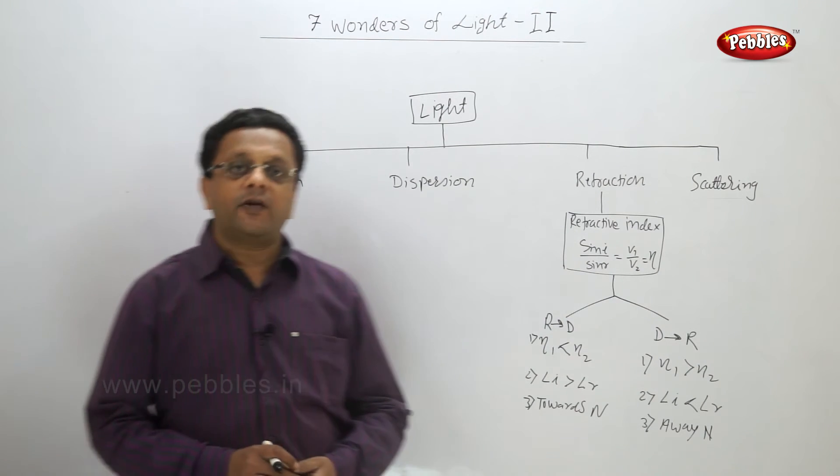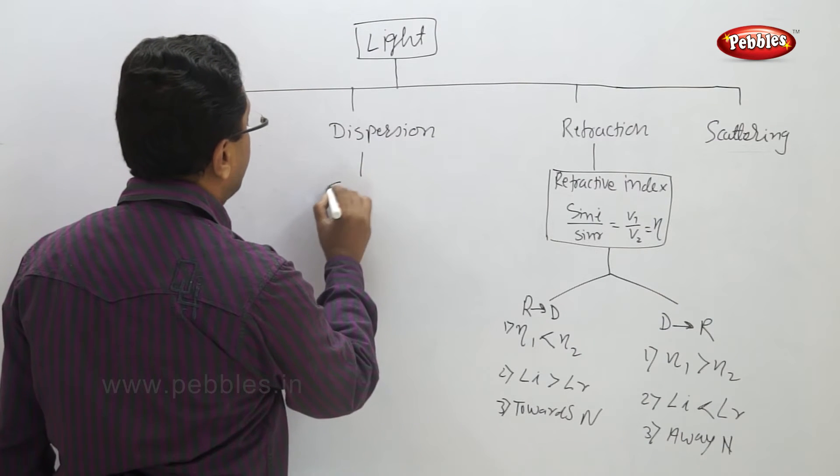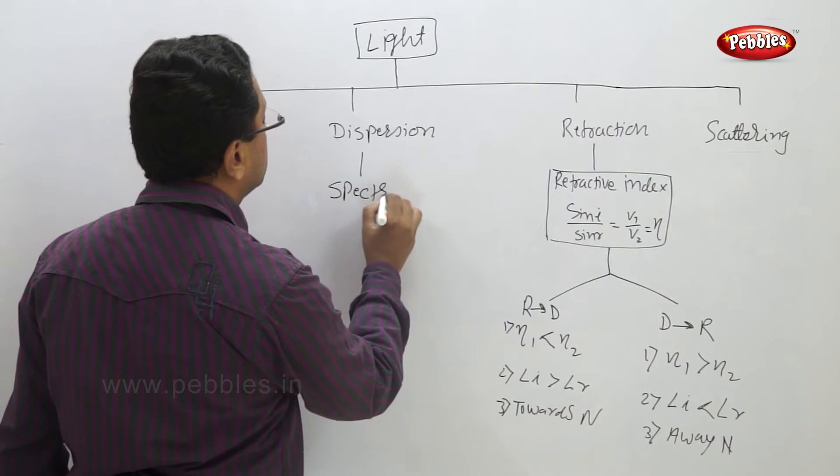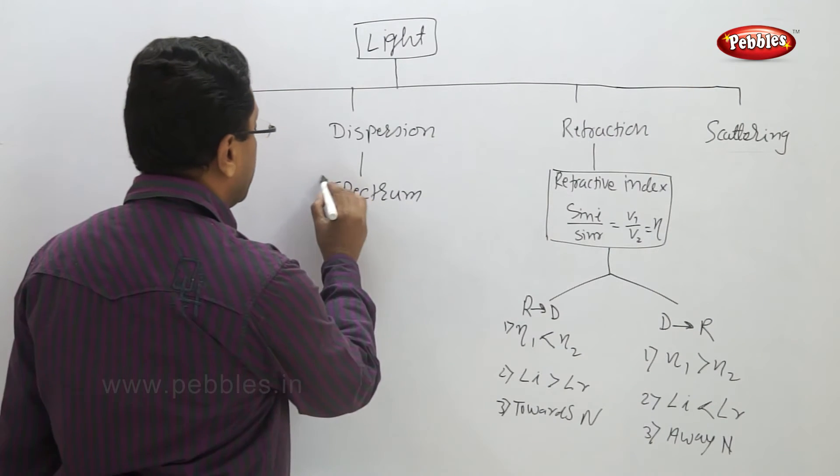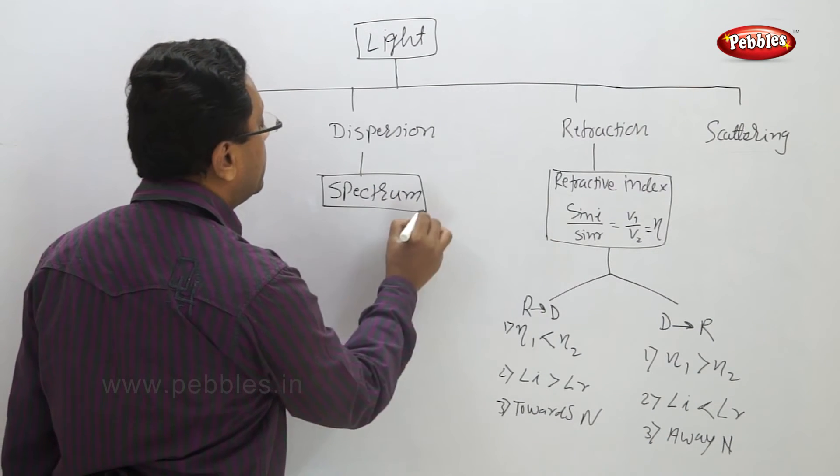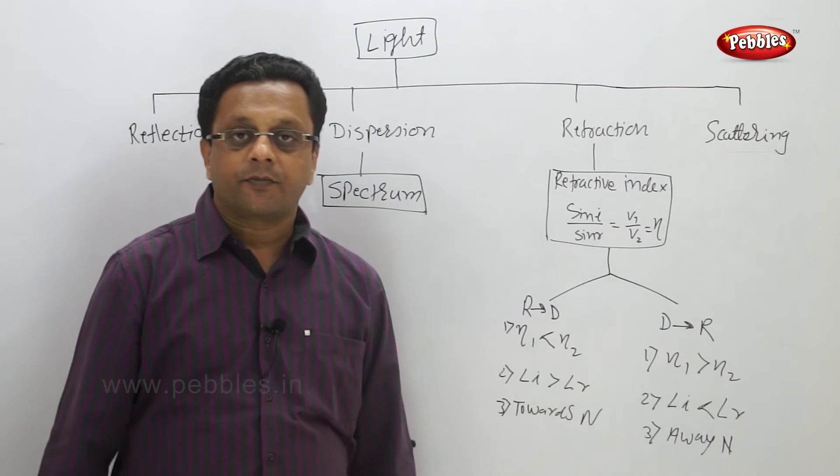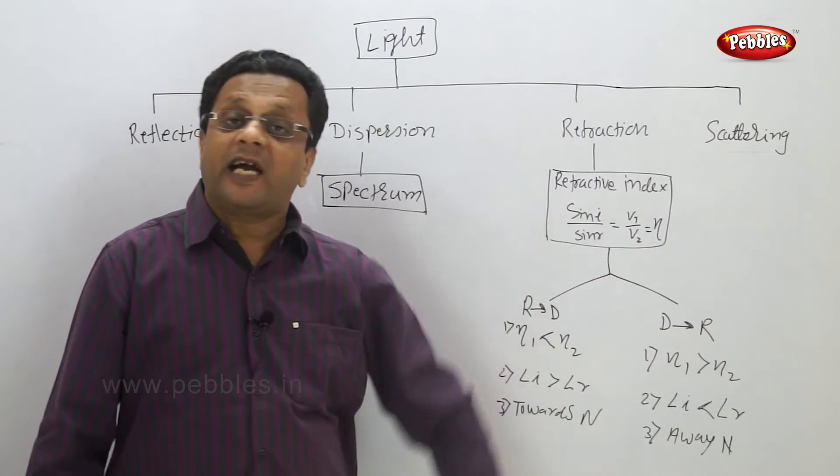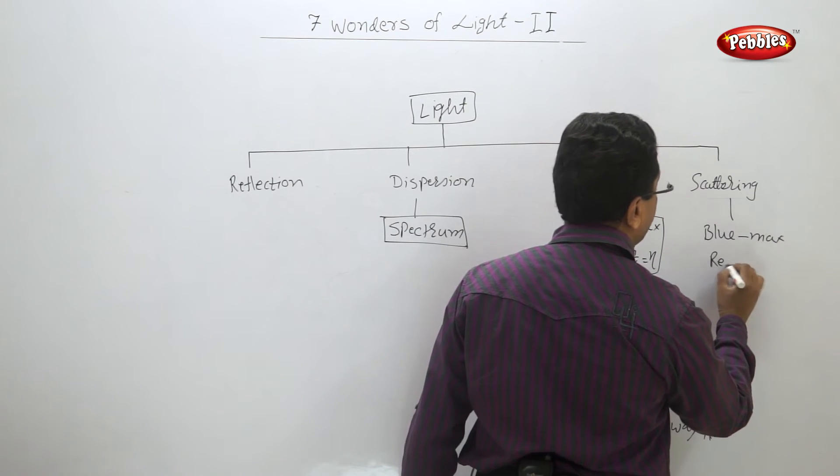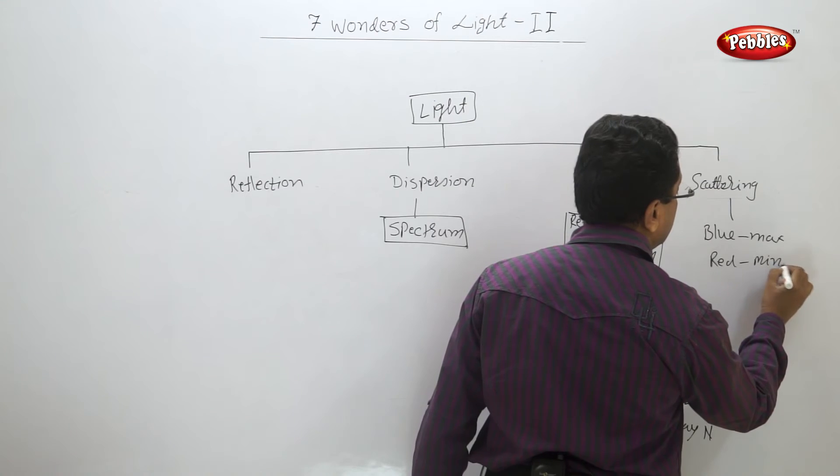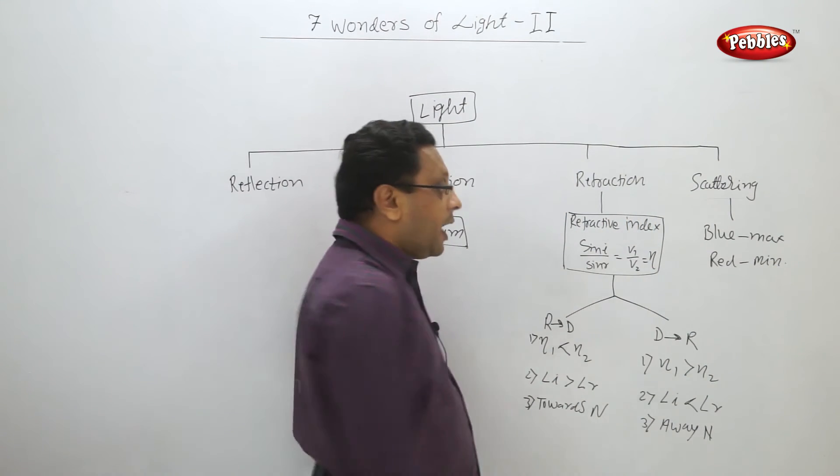Now what happens in case of dispersion of light? In dispersion of light you get spectrum. What happens in case of scattering of light? Blue is maximum and red is minimum, and hence we see sky blue in daytime.